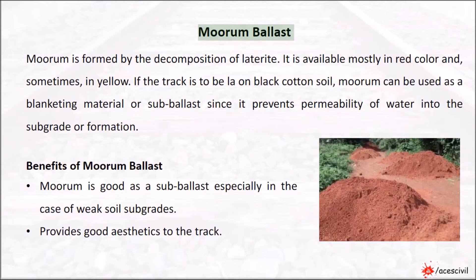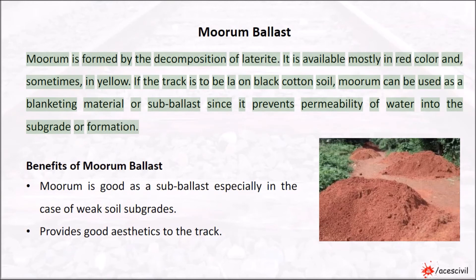Mooram ballast: Mooram is formed by the decomposition of laterite. It is available mostly in red colour and sometimes in yellow. If the track is to be laid on black cotton soil, mooram can be used as a blanketing material or sub-ballast, since it prevents permeability of water into the subgrade or formation.